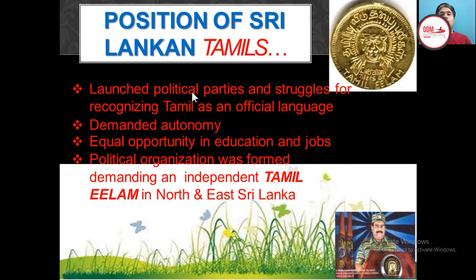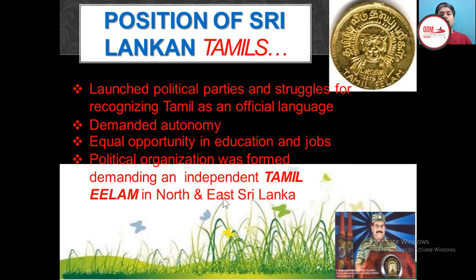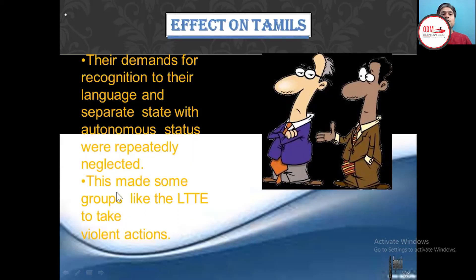They launched political parties and a struggle for recognition of Tamil as an official language. Their second demand was autonomy in administration. They also demanded equal opportunity in education and jobs, because majoritarianism was being followed and they wanted equality. When these demands were neglected, they formed a political organization demanding an independent Tamil Eelam in the north and east of Sri Lanka — a separate country with autonomous status.